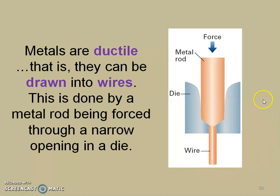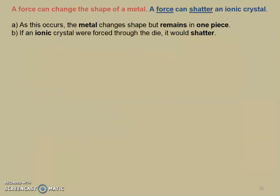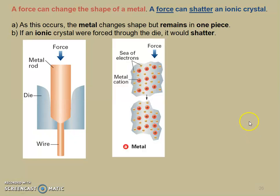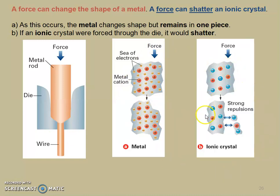Here's a picture showing what happens with a piece of copper. We apply force and put it through a die — a die — and we get wire out of it. But we're not breaking the copper; we're just molding it into a thin wire. When we talk about an ionic crystal, if we apply a force, it's going to shatter. However, metals when we apply a force still stay in one piece. We're not shattering anything like we do with ionic crystals.